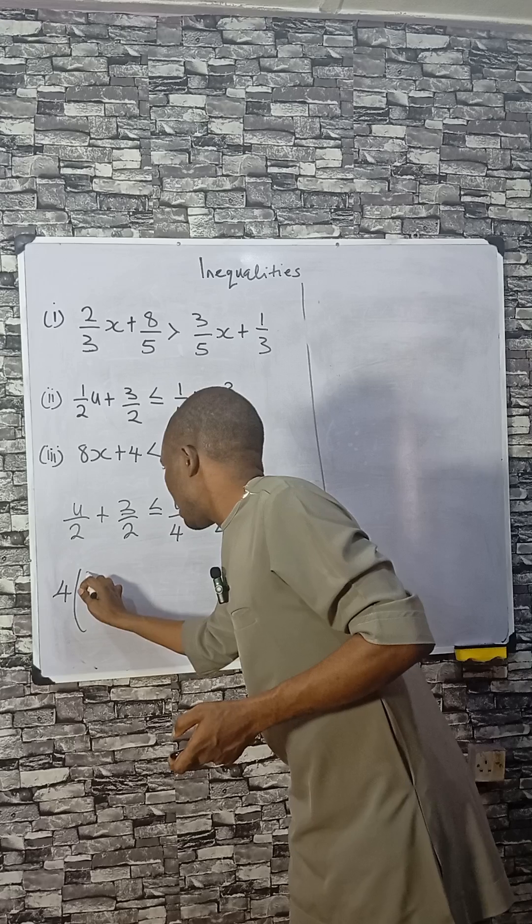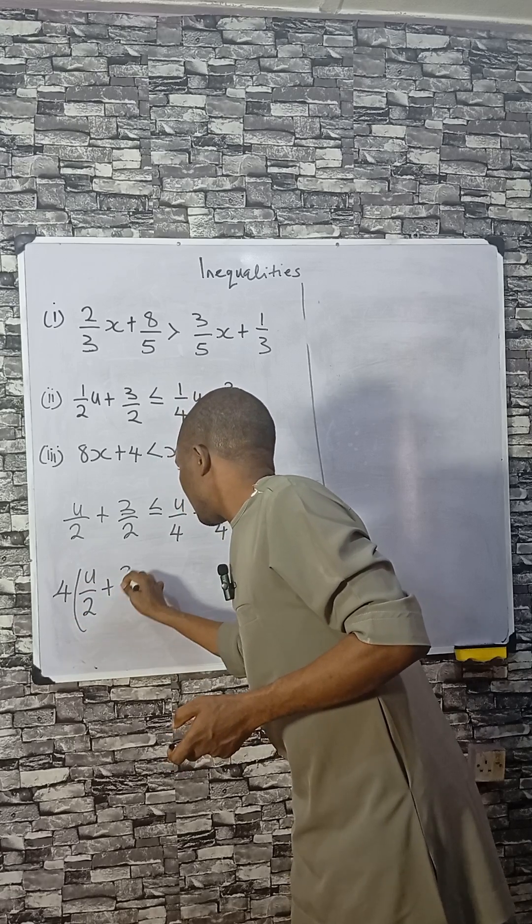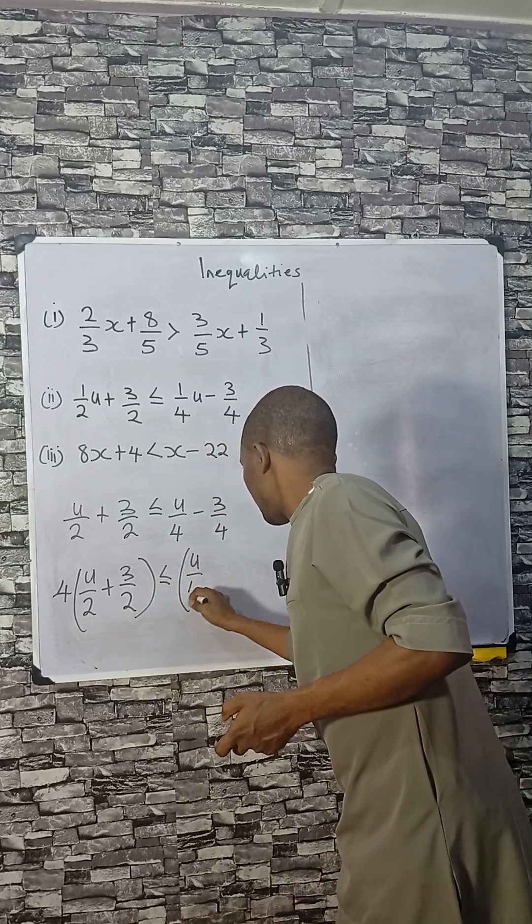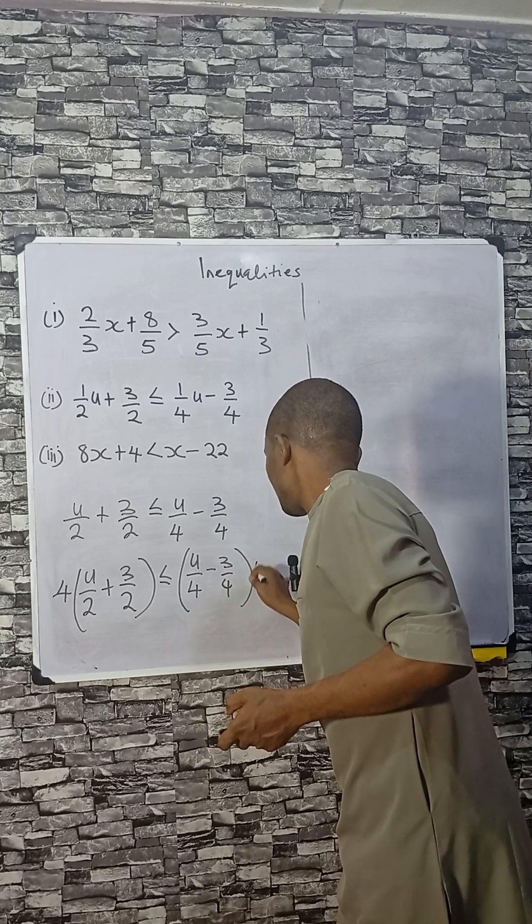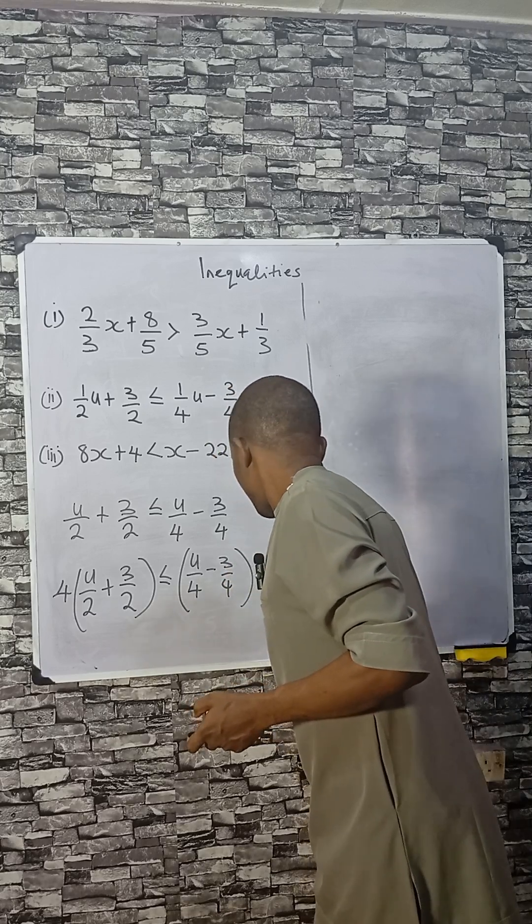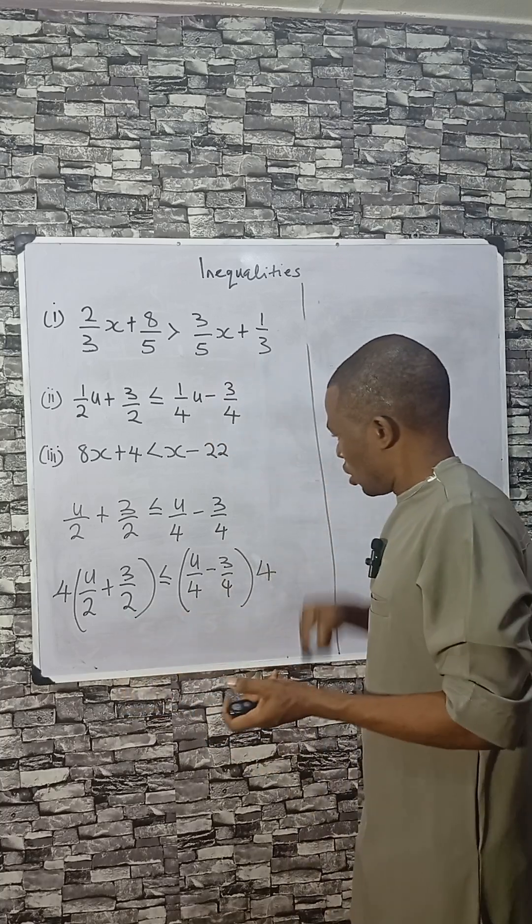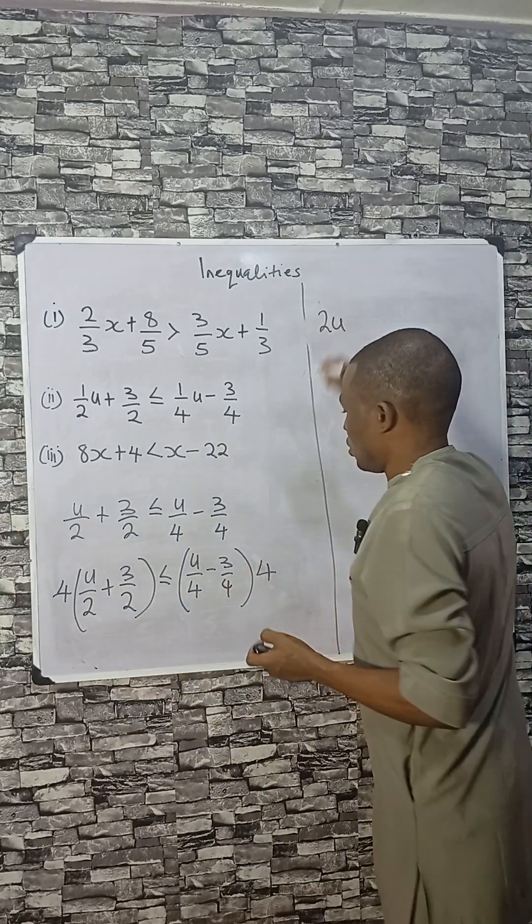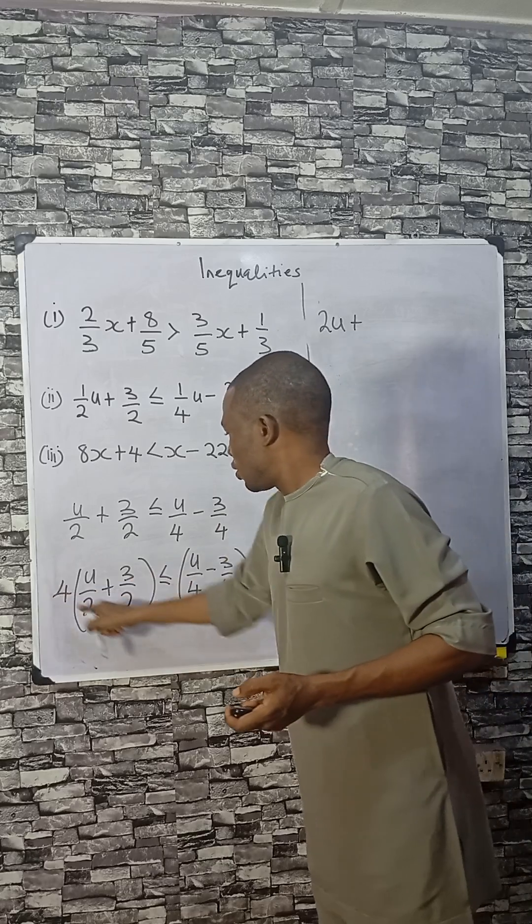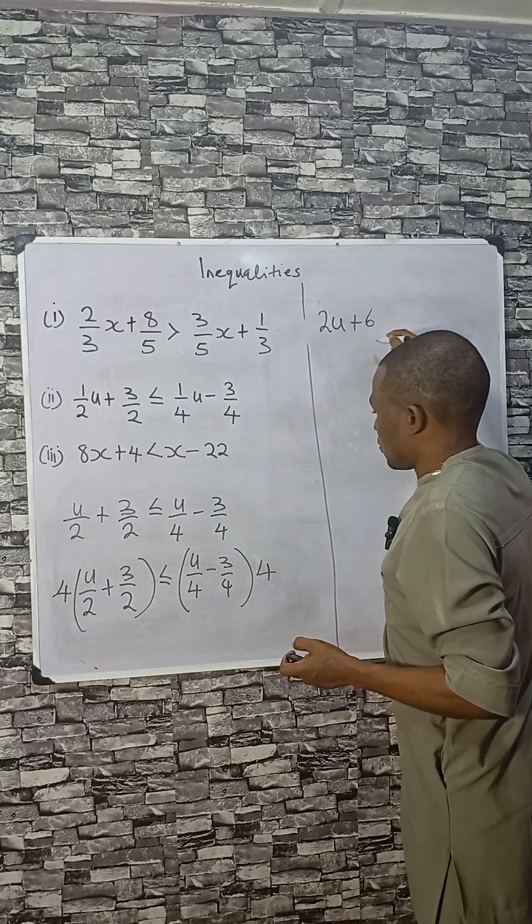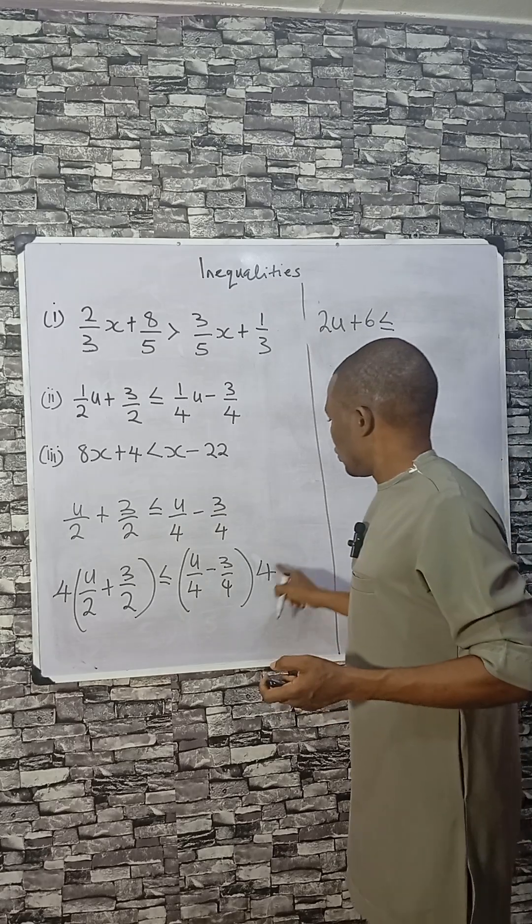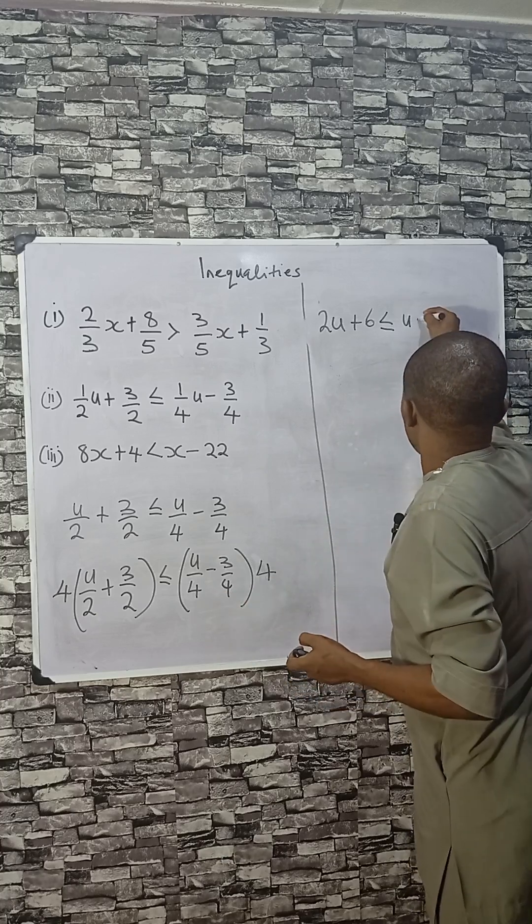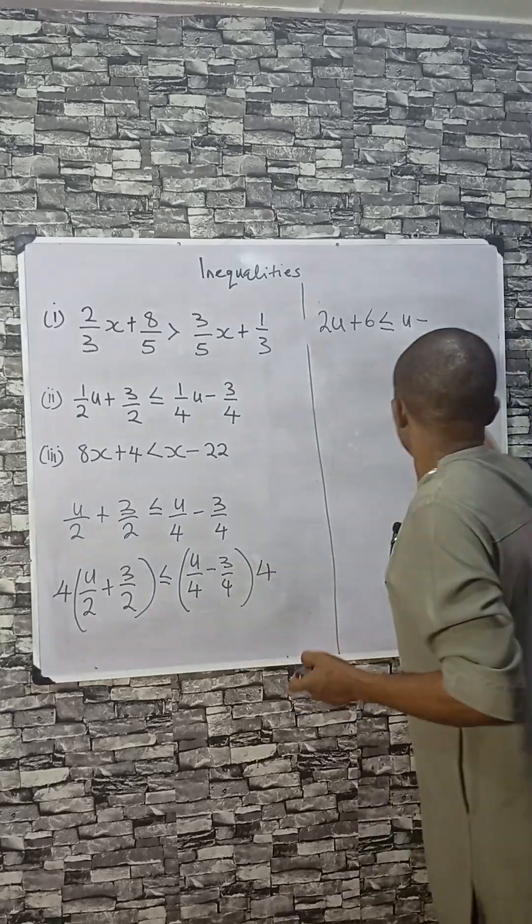Now multiply everything by 4. 4 divided by 2 is 2, 2 times u is 2u. The same thing here, 4 divided by 2 is 2, 2 times 3 is 6 less or equal to 4 divided by 4 is 1, 1 times u is u. Then minus 4 divided by 4 is 1, 1 times 3 is 3.